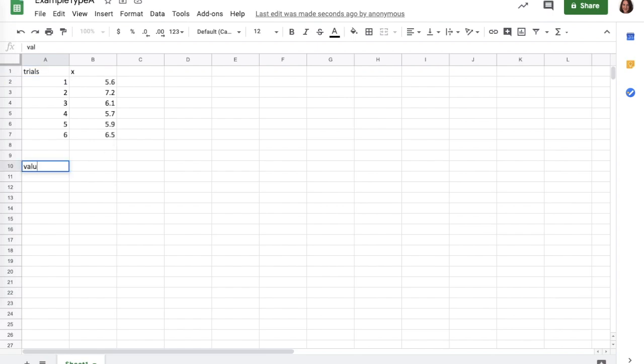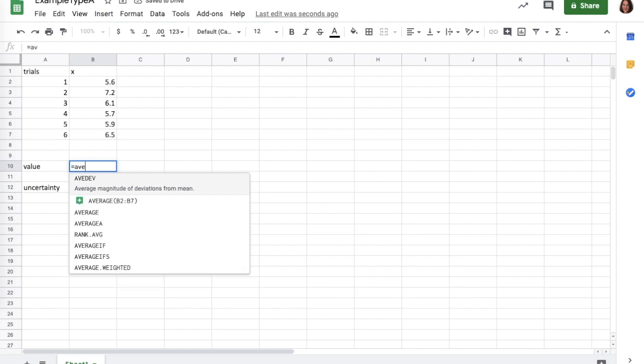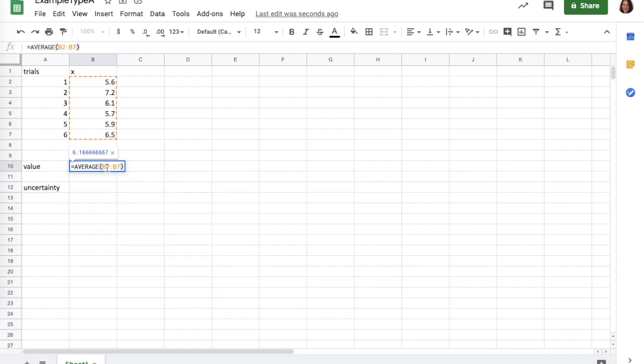We would like to get the value for all these measurements and the uncertainty. So the value, we will do the average. Google has a wonderful function called average. In fact, it's smart enough to say, I think you probably want the average of these numbers, which we do. We'll press enter, there we go. And I'm just going to label this, we took the average.